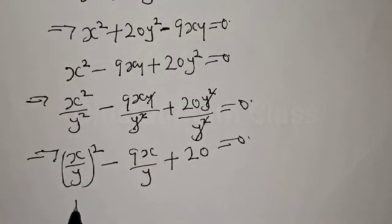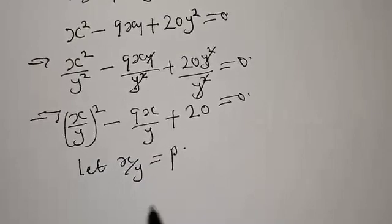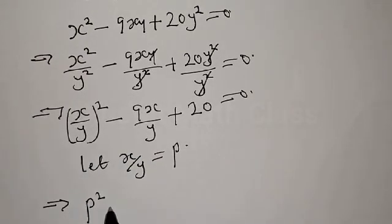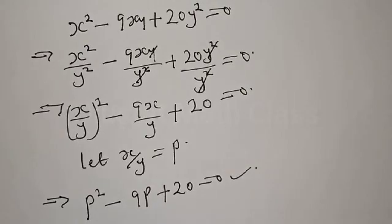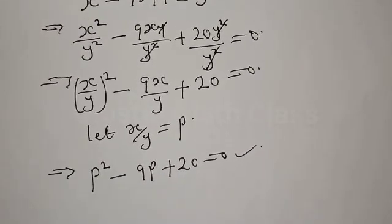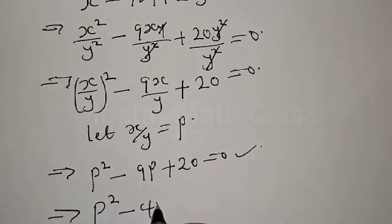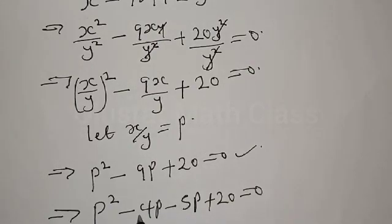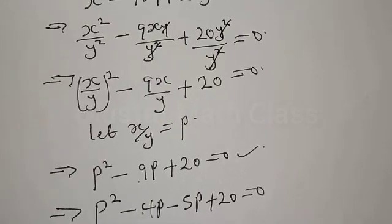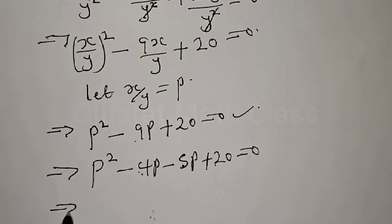Let x over y equal to p. Then we have p squared minus 9p plus 20 equal to zero. This is a quadratic equation, so let's solve by factorization. We split the middle term: p squared minus 4p minus 5p plus 20 equal to zero, since negative 4 times negative 5 gives positive 20, and negative 4 minus 5 gives negative 9.